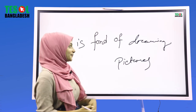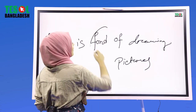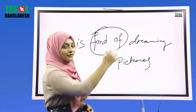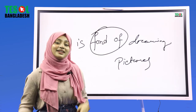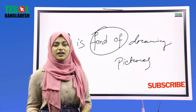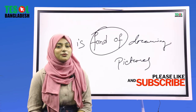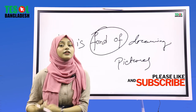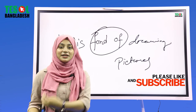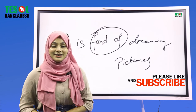Shetak aapni Ingleshe bholbaan 'fond of'. Aakon teke aapni 'fond of' use korebo, 'like' use na kore. Eki word aamra bar bar use na kore — try kore bhe bhinno dharaner kichu word ba phrase use korea. Ete aami dhar vocab barbe.